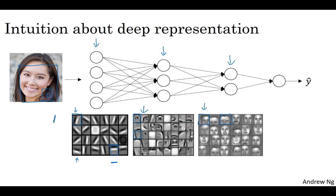For example, if you're trying to build a speech recognition system, it's harder to visualize speech, but if you input an audio clip, then maybe the first level of a neural network might learn to detect low-level audio waveform features, such as is this tone going up, is this going down, white noise or sibilant sound, and what is the pitch? But it can detect low-level waveform features like that. And then by composing low-level waveforms, maybe you'll learn to detect basic units of sound.